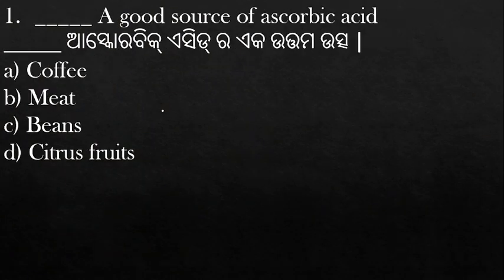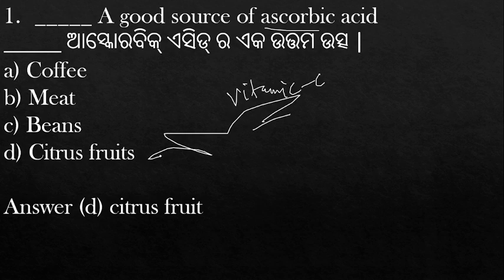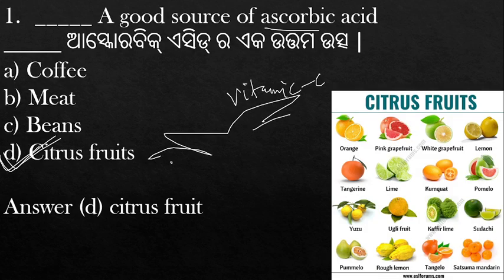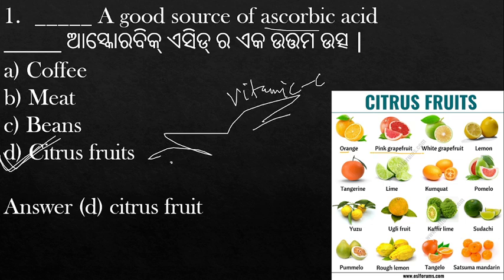First question: which is a good source of ascorbic acid? The options are coffee, meat, beans, and citrus. Ascorbic acid is Vitamin C. The answer is citrus food — orange, pink grapefruit, white grapefruit, and lemon are all good sources of Vitamin C.